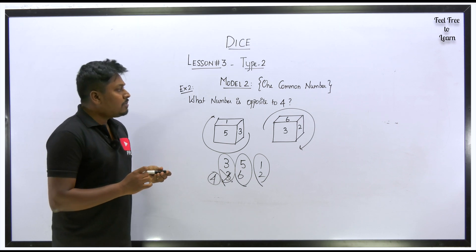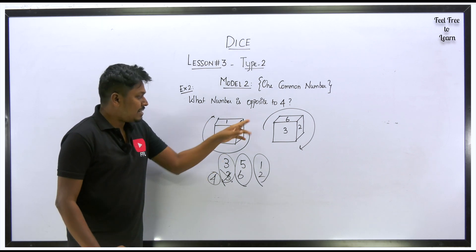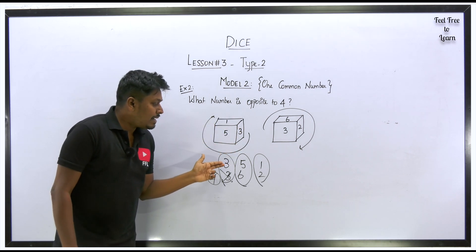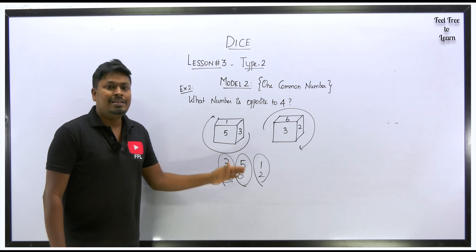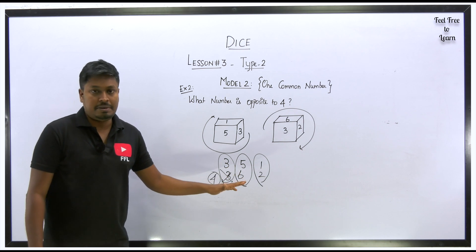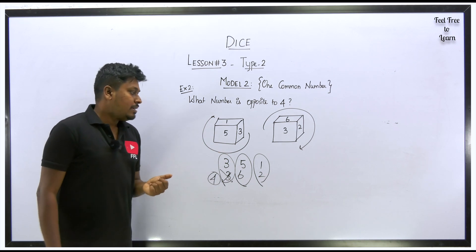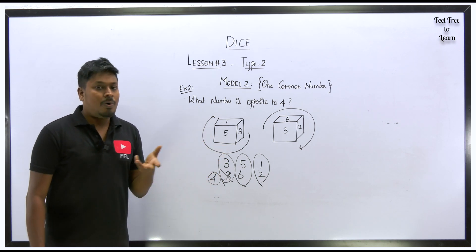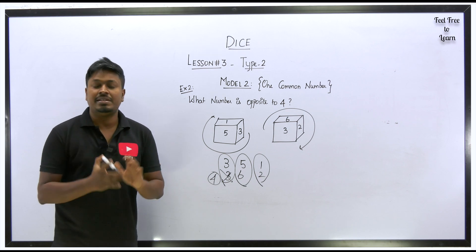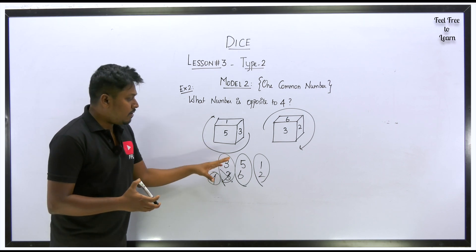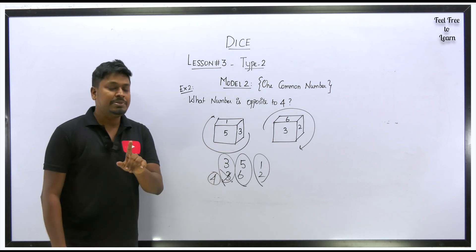Model 2 questions with one common number are simple. Just identify the common number, write the remaining numbers in a clockwise direction from it in each diagram, and the aligned pairs are opposite faces. The remaining unmatched number is opposite to the common number. This one shortcut solves 100% of dice questions, so be strong on this concept and always start the series from the common number.